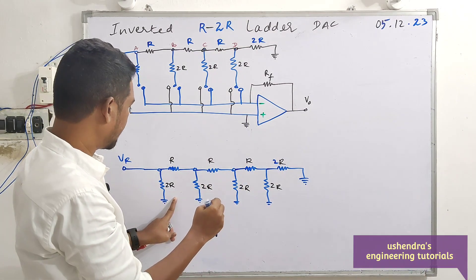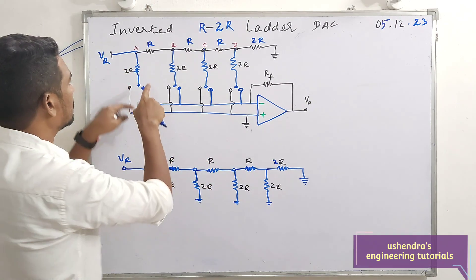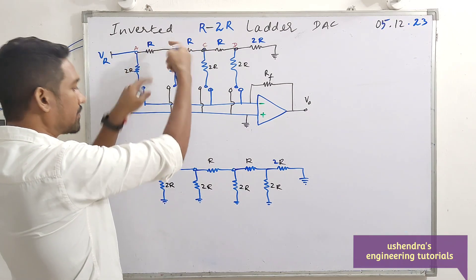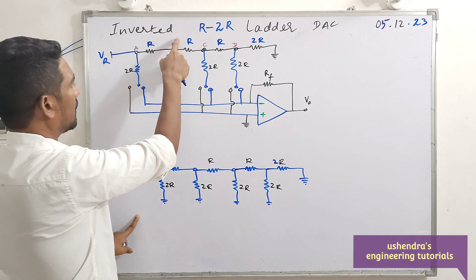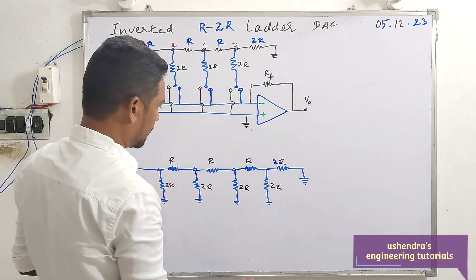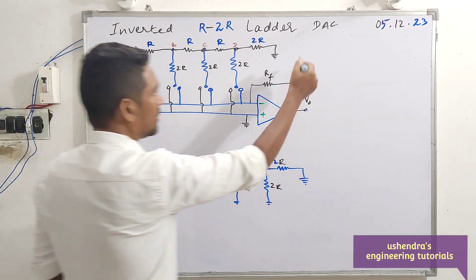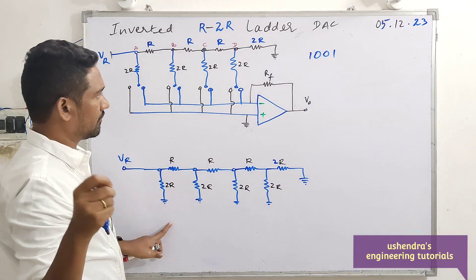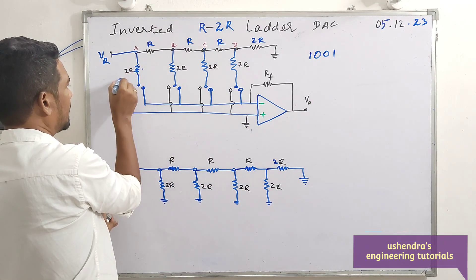The discussion would be easier if you find out the drop across A, B, C, D. It may be VR by 2, VR by 4, but how did we get VR by 2? It appears VR by 2 here, 1/4 of VR, 1/8 of VR, and 1/16 of VR. This will be the MSB side.